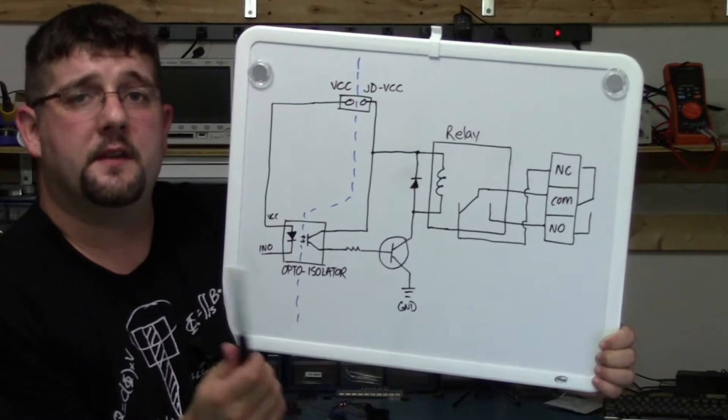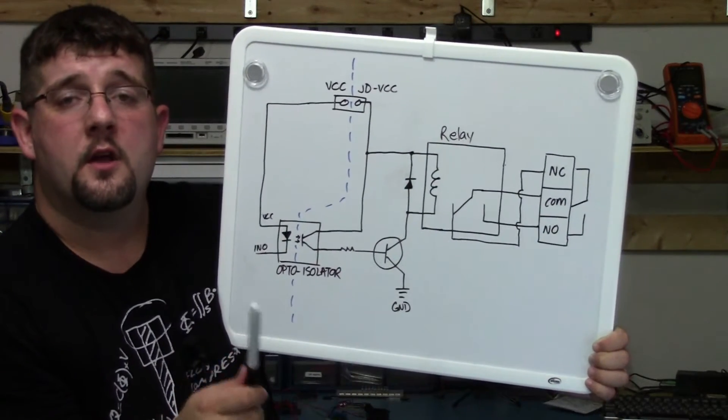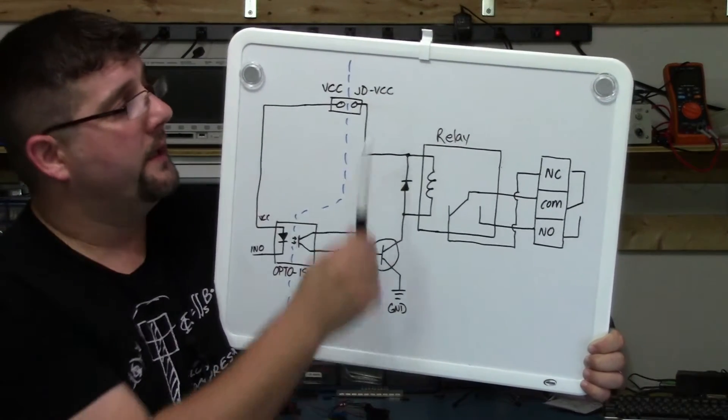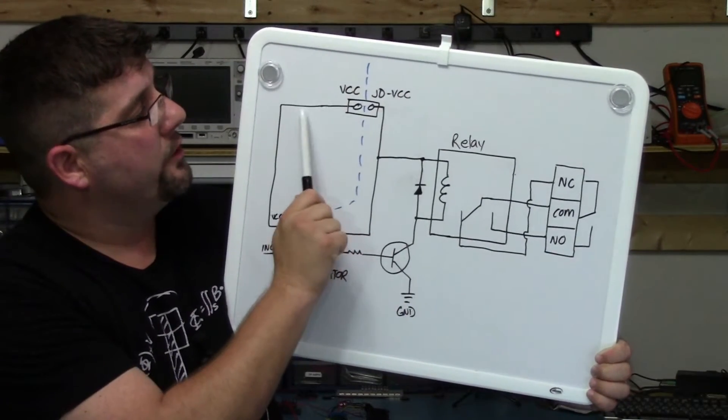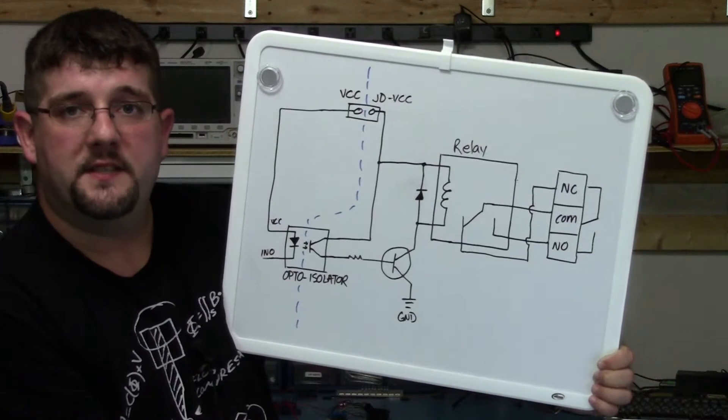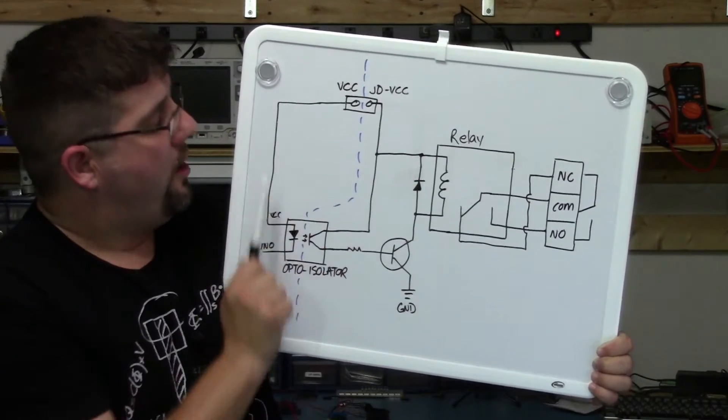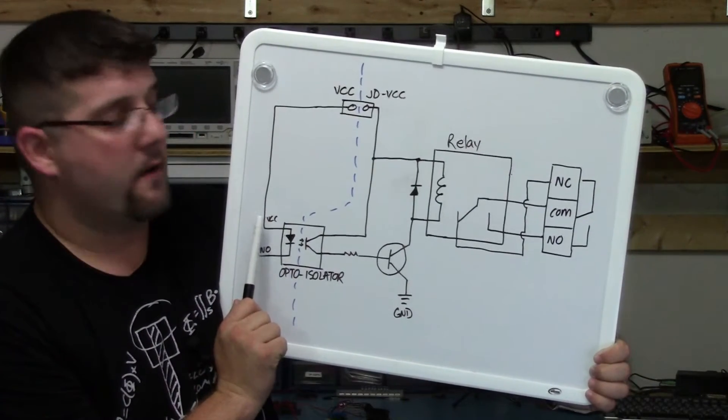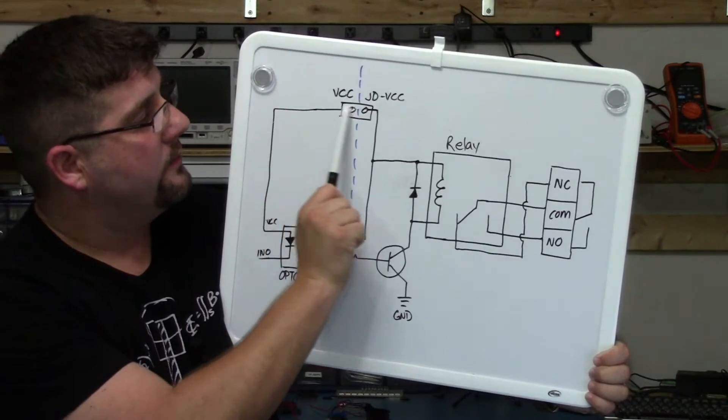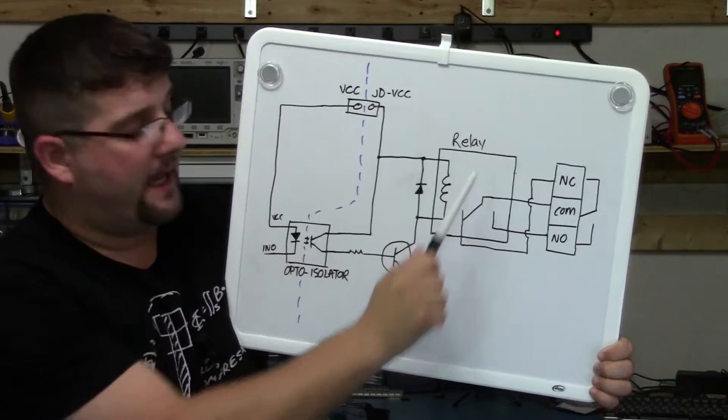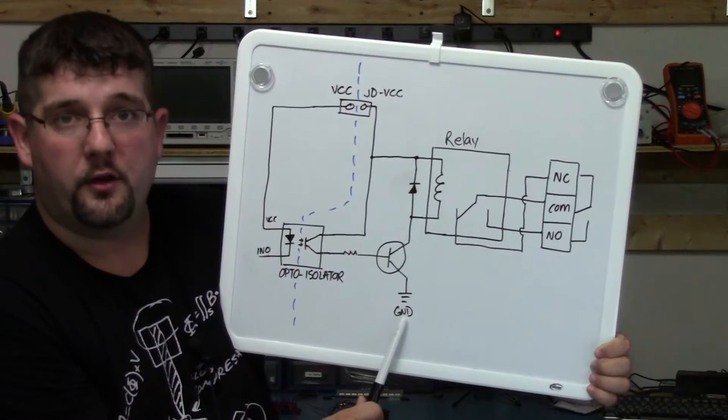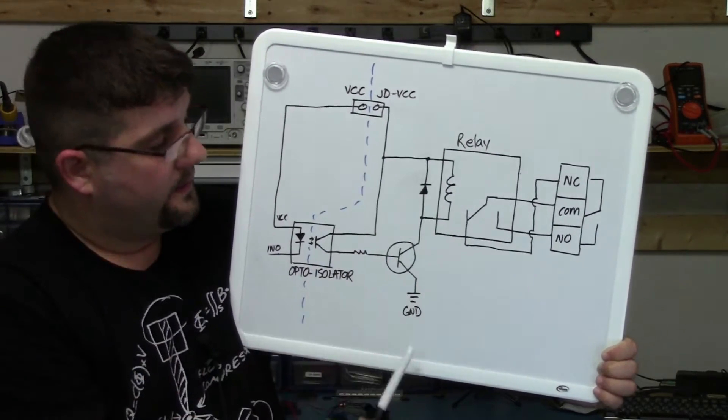Now if we were to jumper the VCC and the JDVCC together, which is what you see a lot of times if you're looking at YouTube videos or examples that other people are doing, this comes default. A lot of times there's a jumper across these, then we're using VCC to power JDVCC. We're using our VCC from the Arduino, our 5 volt rail from the Arduino to actually supply 5 volts to the relay. And in that case we're going to use the ground on the Arduino to complete the circuit.